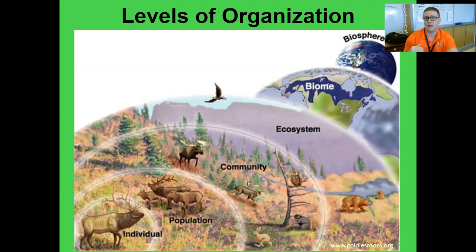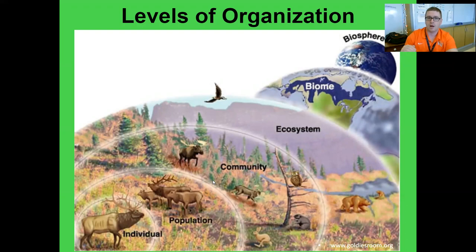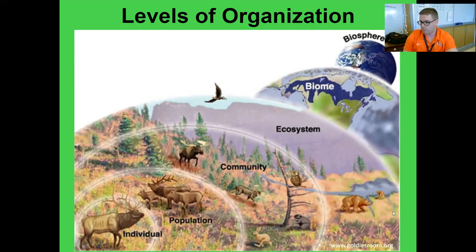Once you start throwing in those non-living abiotic factors, you've moved up to the ecosystem level. The presence of abiotic factors is the defining characteristic that jumps us from looking at things at a community level up to the ecosystem level. An ecosystem is the smallest level of organization where you see biotic and abiotic interactions occurring. In the picture, you can see a couple of bears along the streamline probably going after salmon — that's a classic example of biotic and abiotic things beginning to interact.